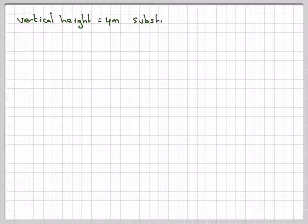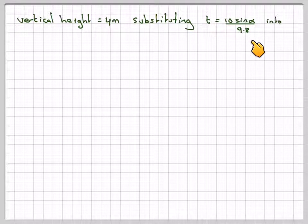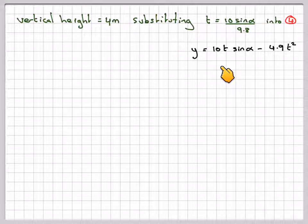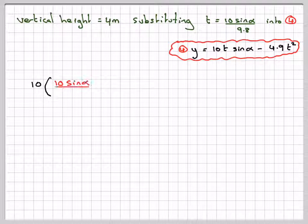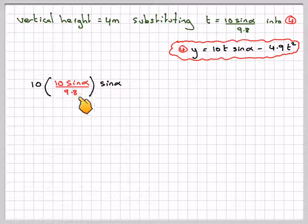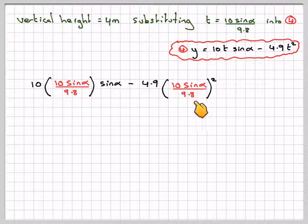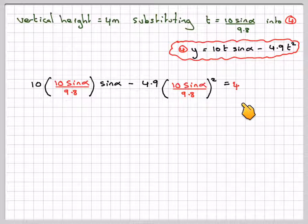The vertical height is 4 metres. Substituting T equals 10 sin alpha over 9.8 into equation 4, Y equals 10T sin alpha minus 4.9T squared. So we get 10 times 10 sin alpha over 9.8 sin alpha minus 4.9 times 10 sin alpha over 9.8 all squared equals 4.